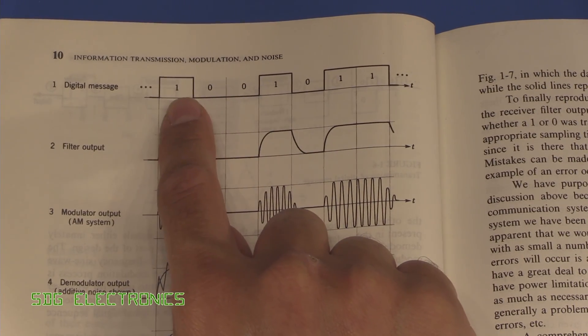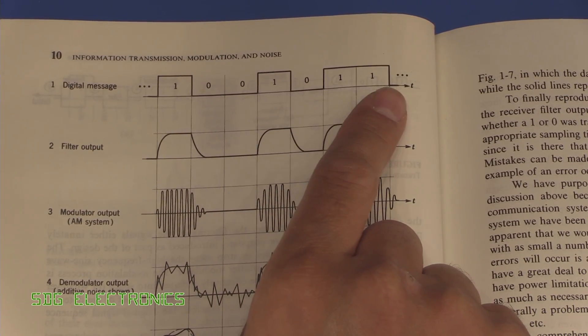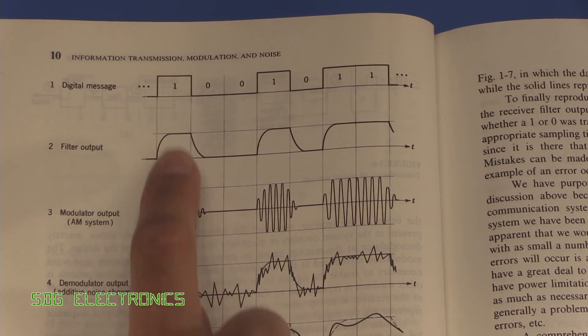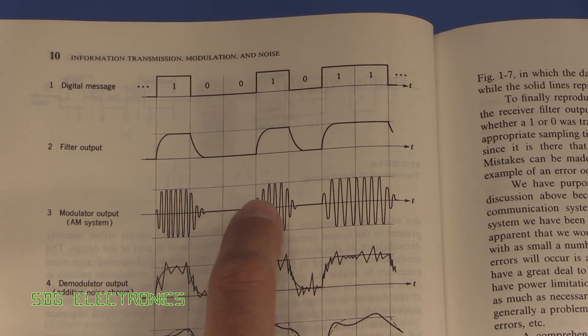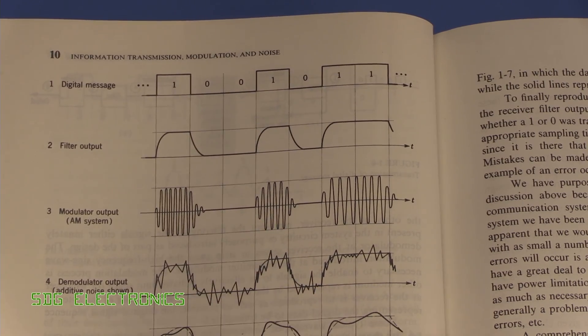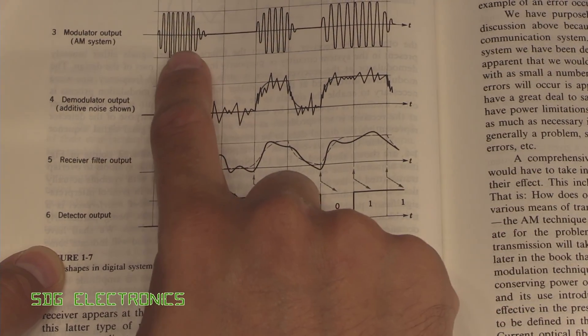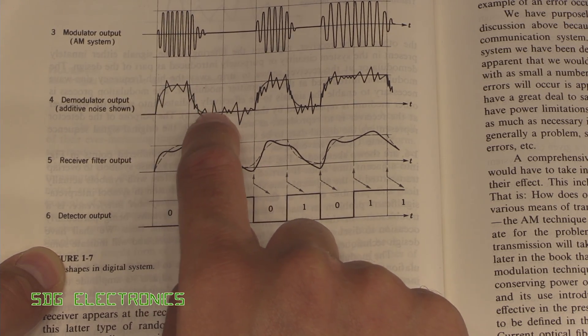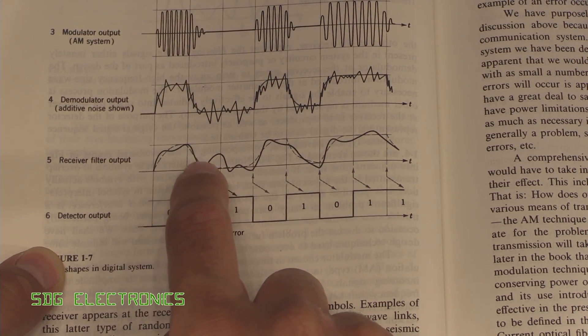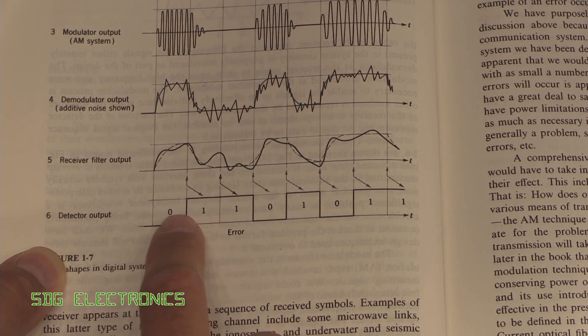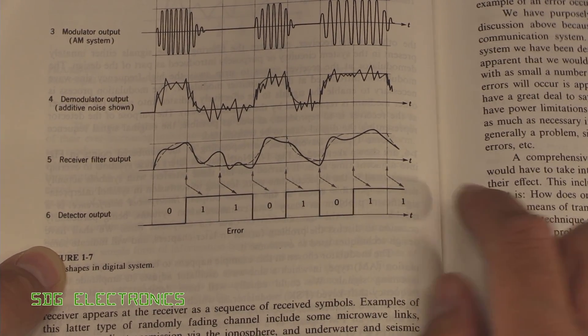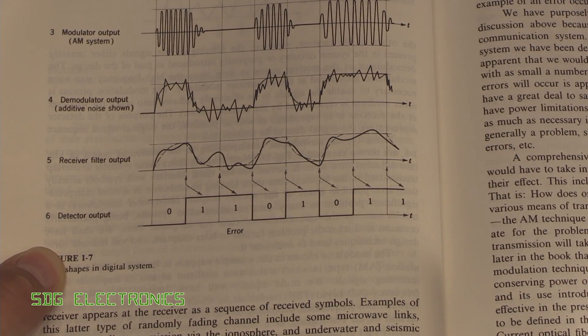We have our digital message coming in 1001011, that's then filtered, modulated, so whenever there's a one you can see the carrier and when there's a zero you can't. Then at the receiver end that modulated signal is demodulated, so we've got our original signal back. It's then filtered and passed through a threshold detector, and then you can see we've got the original signal fully reconstructed as a digital signal.